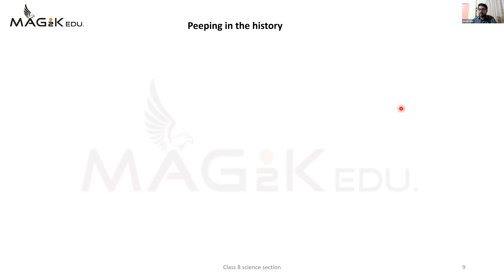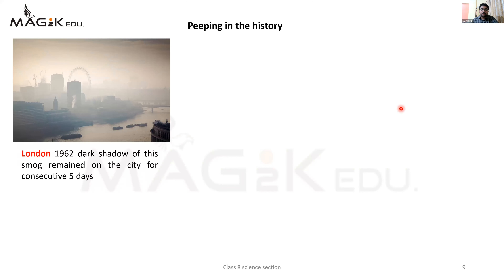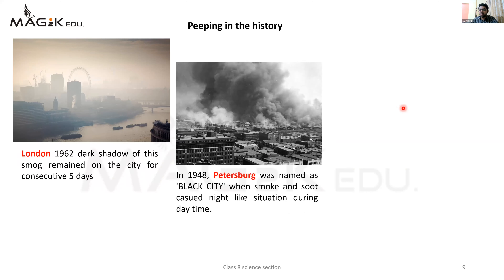Keeping in history - air pollution ke wajah se history mein bahut se problems hue. London 1962 - dark shadow of smoke remained on the city for consecutive five days. Yani 1962 mein London mein air pollution ke wajah se paanch din tak poora London shehar smog mein ghira hua tha - logon ko kuch dikhaai nahi de raha tha, har jagah unhe smog hi smog yaani smoke hi smoke dikhaai de raha tha. 1948 - Petersburg was named as 'black city' when smoke and soot caused a night-like situation in daytime. Petersburg mein to air pollution itna ho gaya tha ki us city ko black city ka naam de diya gaya tha, kyunki din ke time bhi unhe raat jaisa feel aa raha tha - itna smoke ho gaya tha.